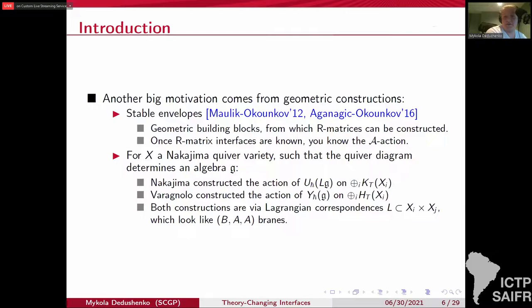In both cases, those constructions proceed on similar steps. They're using Lagrangian correspondences in the products of varieties which look like BAA branes in some hyperkähler manifold. So they suggest that there are some boundaries or interfaces, supersymmetric interfaces.